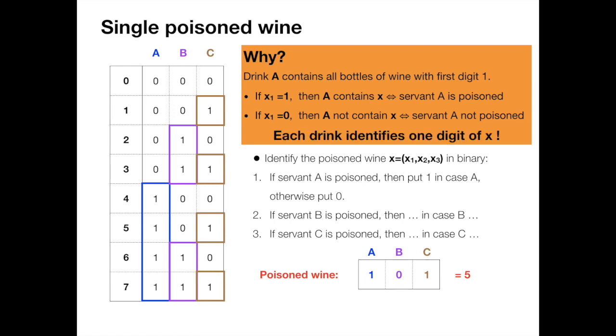So each drink identifies one digit of x, and using all of them we can recover the full binary representation.